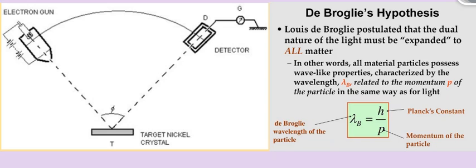You see an electron gun which throws the electrons. These electrons come from the electron gun and strike a nickel crystal.